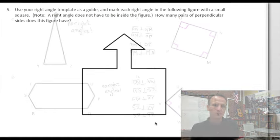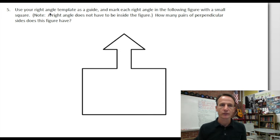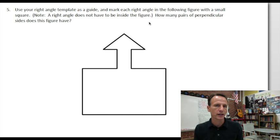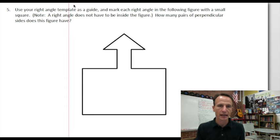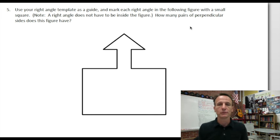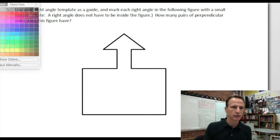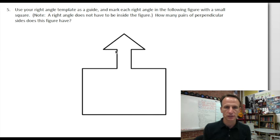Number five actually is not really a problem — it's more of the same. We're simply going to identify using a right angle template as a guide, mark each right angle in the following figure with a small square, and note that a right angle does not have to be inside the figure. How many pairs of perpendicular sides does this figure have? Which is something of a tricky question. Let's start off with all the obvious ones and change colors to mark them so we can see clearly — these are right angles. Starting at the top and working our way down.